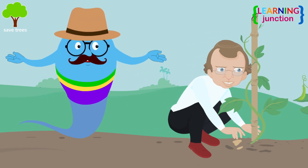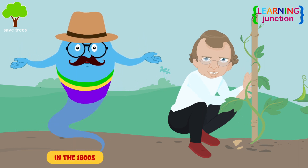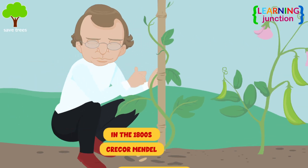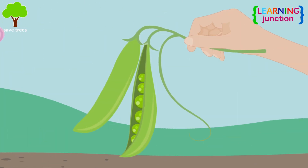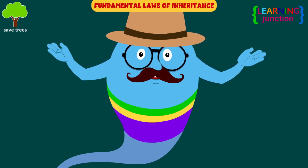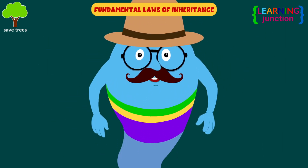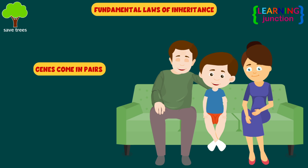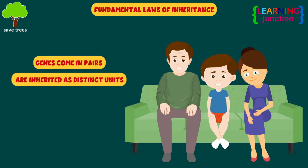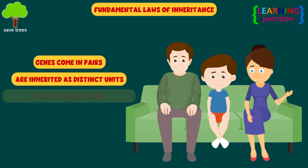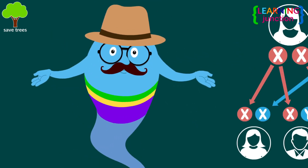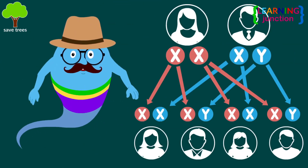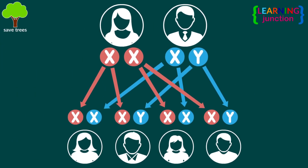The science of genetics began in the 1800s when Gregor Mendel, the father of genetics, figured out how traits are inherited by studying peas. Gregor Mendel discovered the fundamental laws of inheritance. He said that genes come in pairs and are inherited as distinct units, one from each parent. He recognized the mathematical patterns of inheritance from one generation to the next.